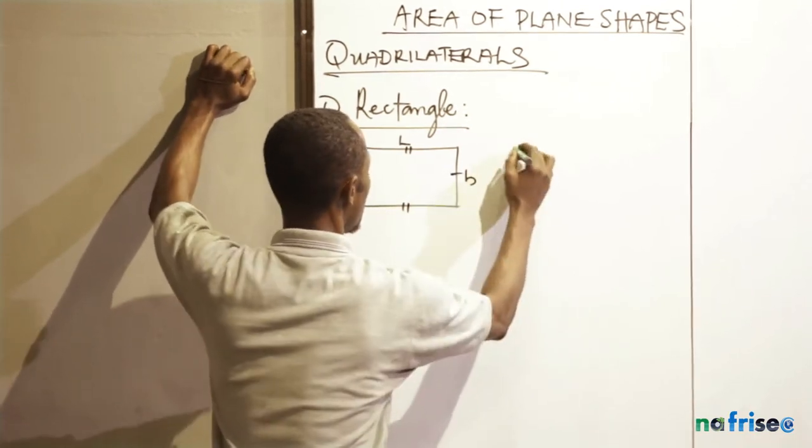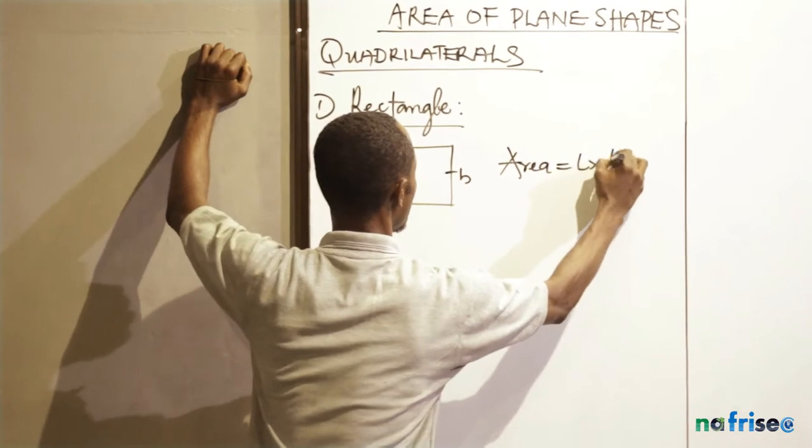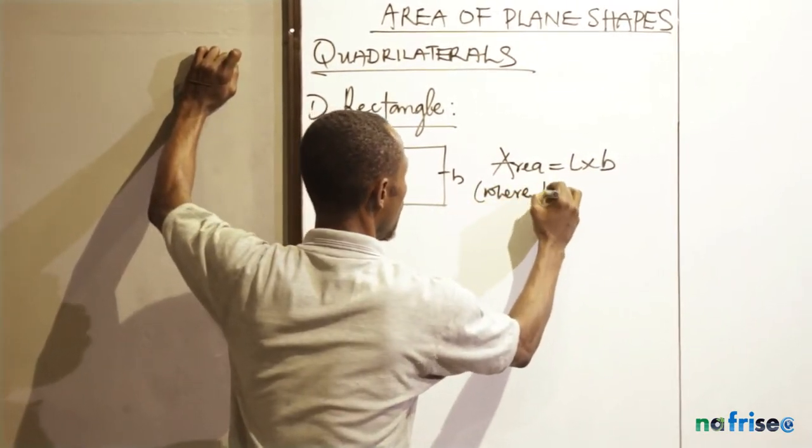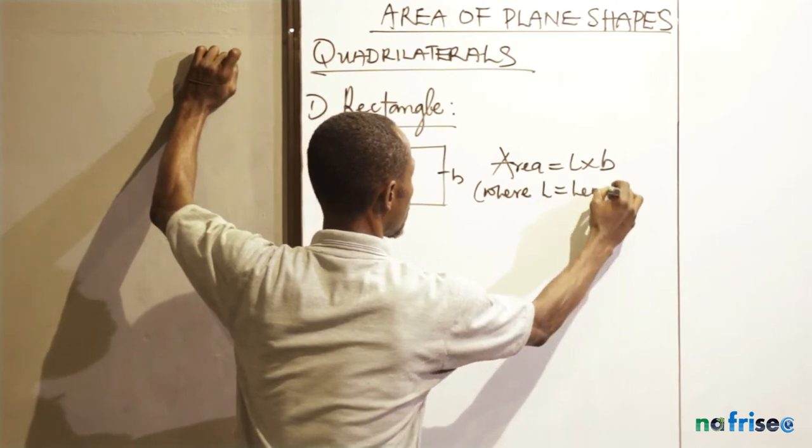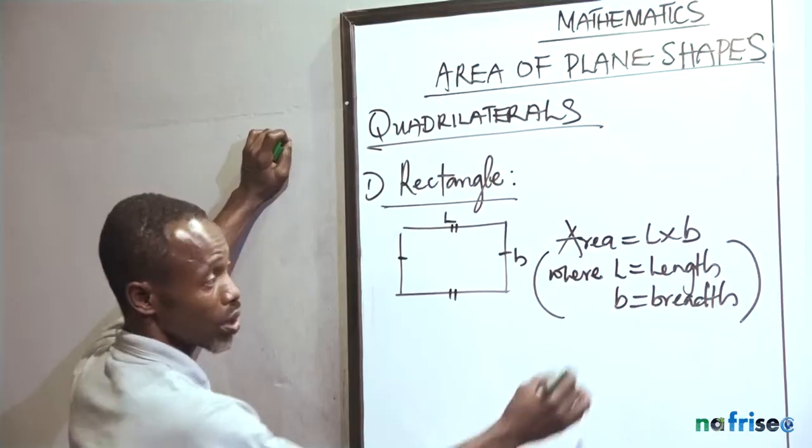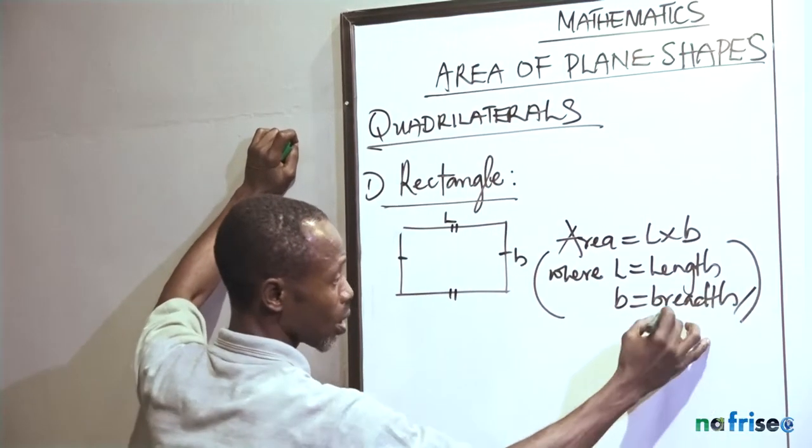The area of a rectangle equals length times breadth, where L equals length and B equals breadth.